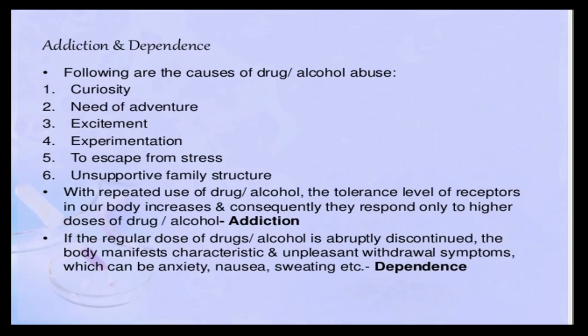With repeated use of drugs or alcohol, the tolerance level of receptors in the body increases. There are different receptors — gastrointestinal receptors, CNS receptors, and others. The tolerance levels of these receptors increase with repeated use, and consequently they respond only to higher doses of drugs or alcohol. Initially the dose will be less, but as the person keeps using, the tolerance level of the receptors keeps increasing so they can respond only to higher and higher doses. This condition is called addiction.